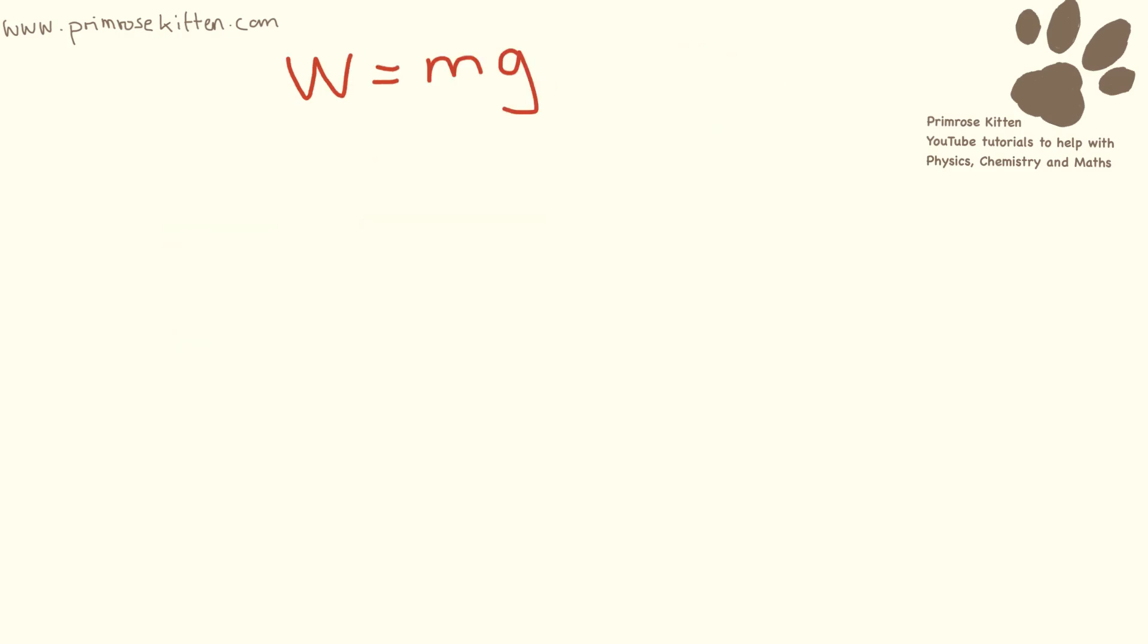Here we have weight equals mass times gravity. I would like you to make mass the subject of the formula. Mass is currently times by gravity. The opposite of that is divided by gravity. So we need to do that to both sides. And we get weight divided by gravity equals mass.